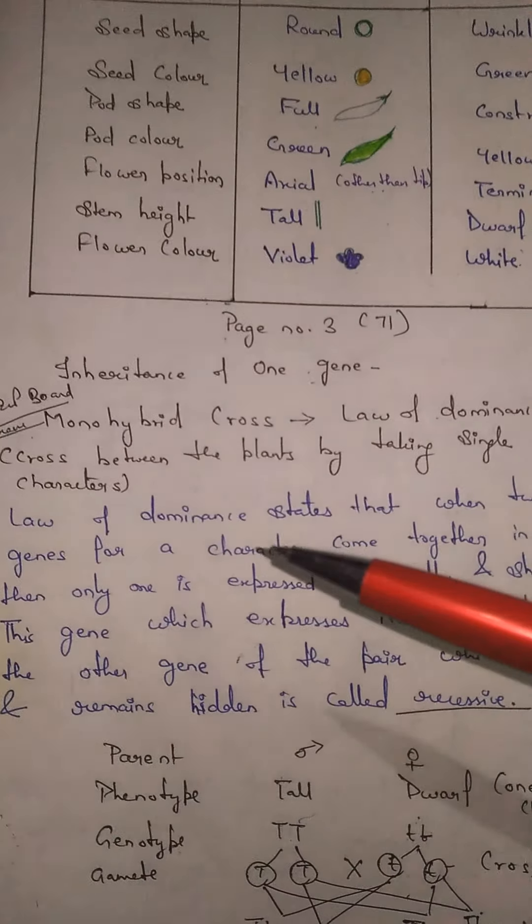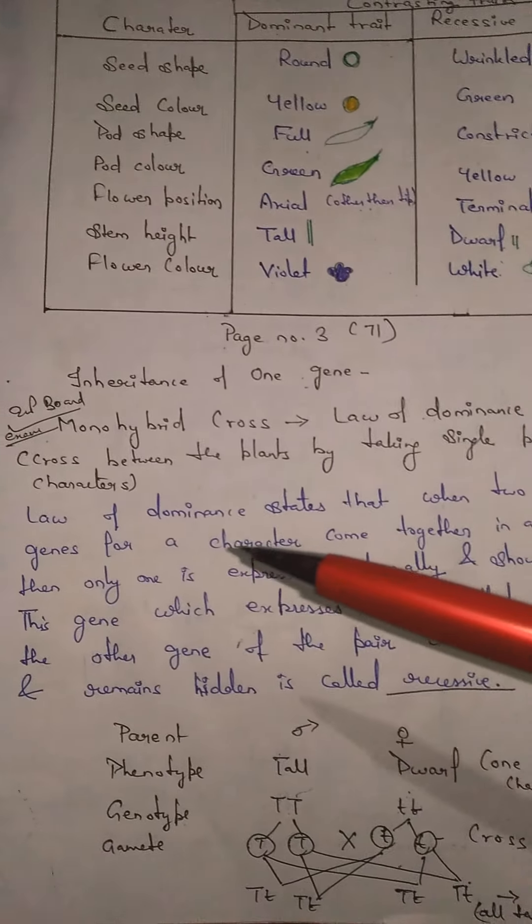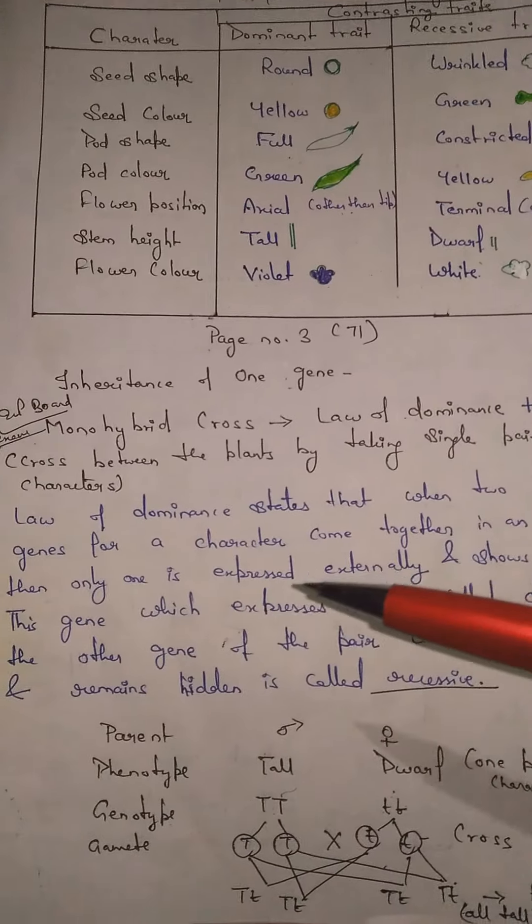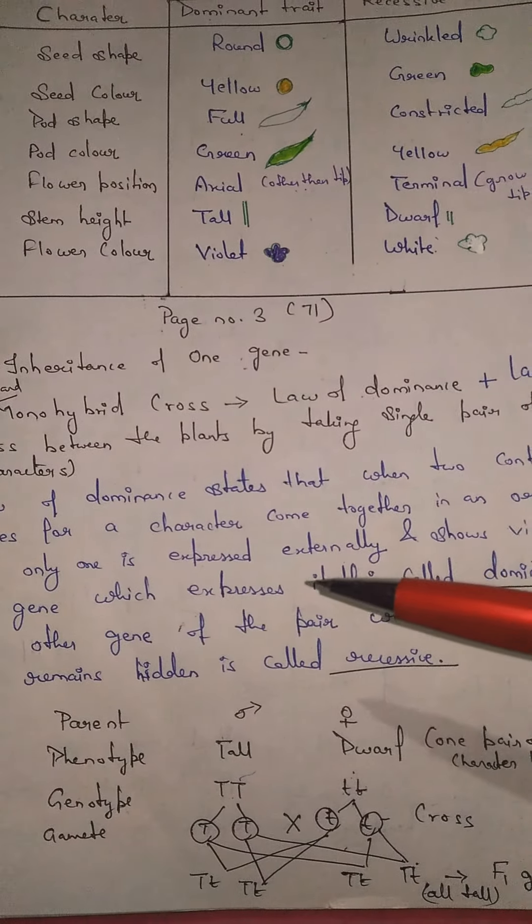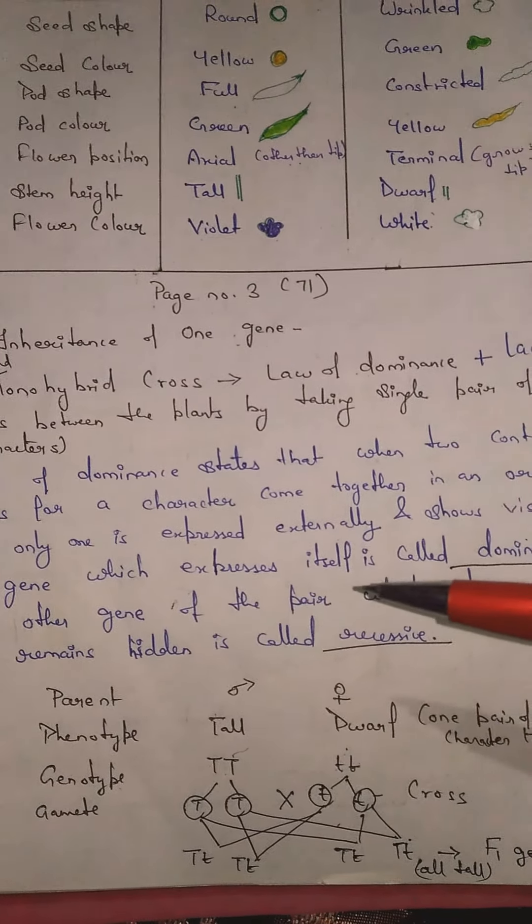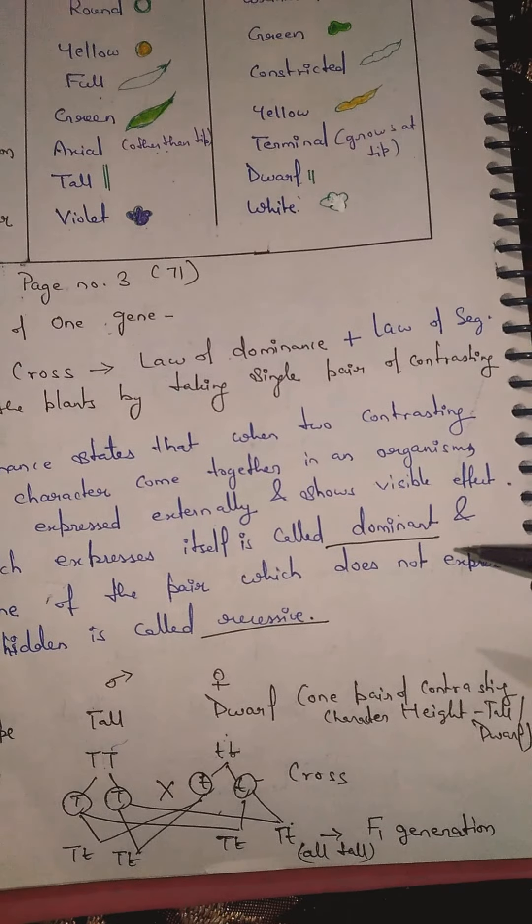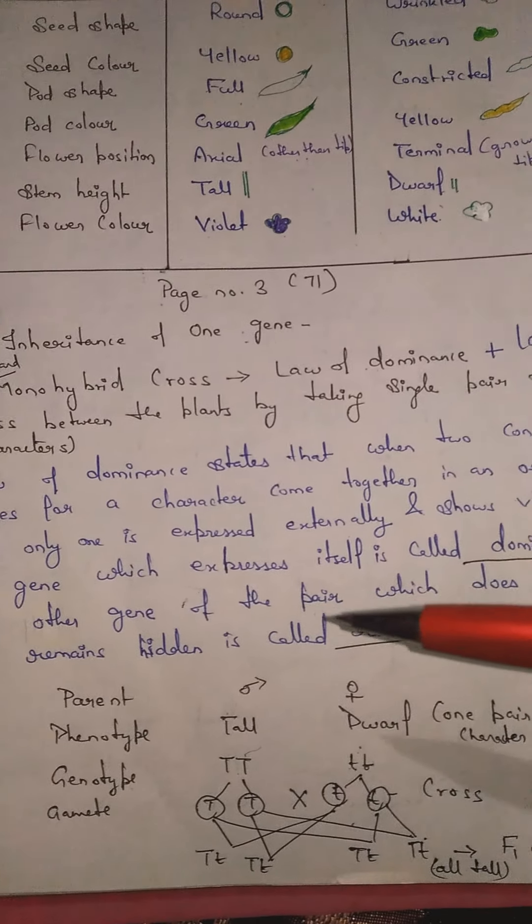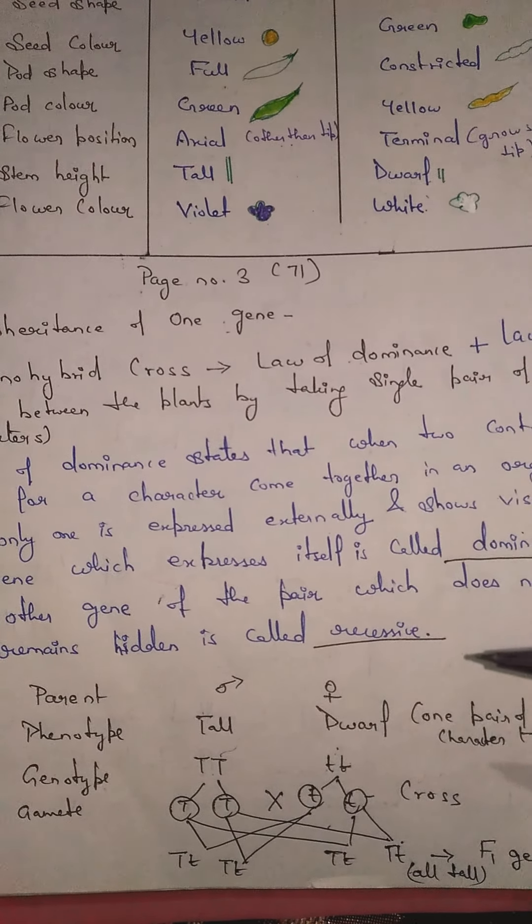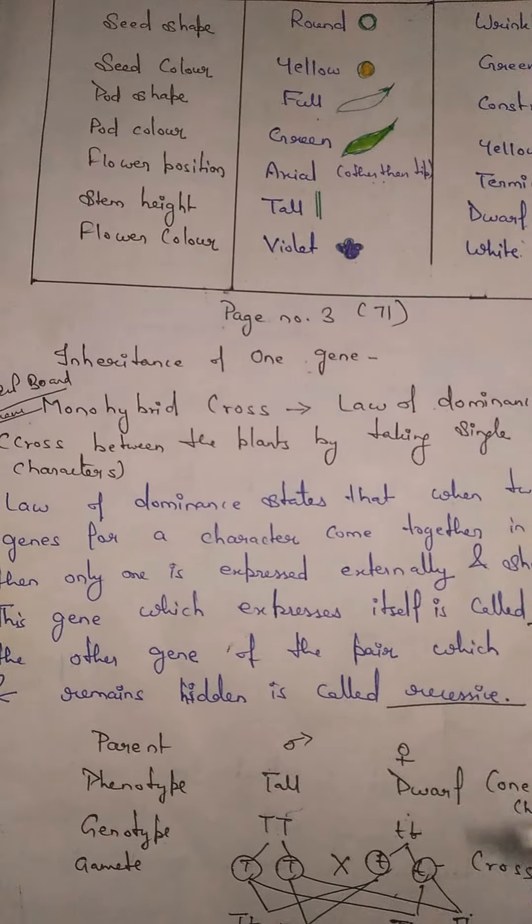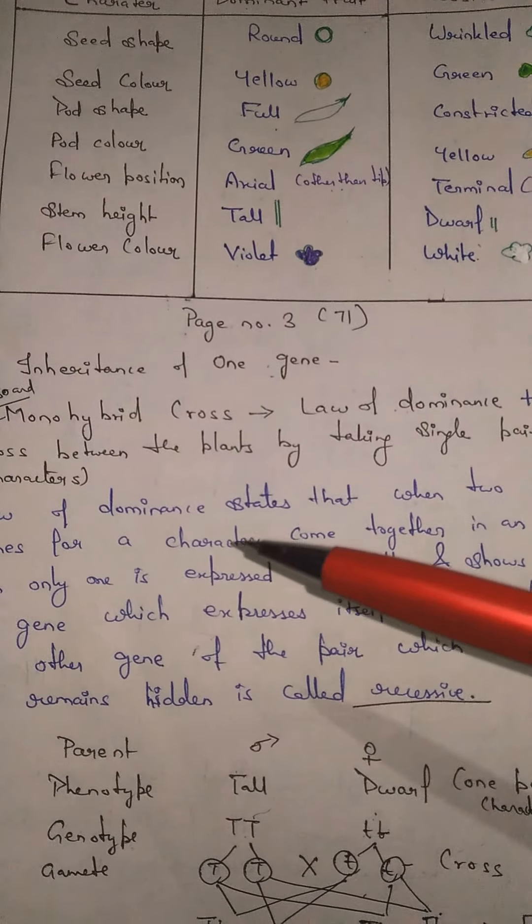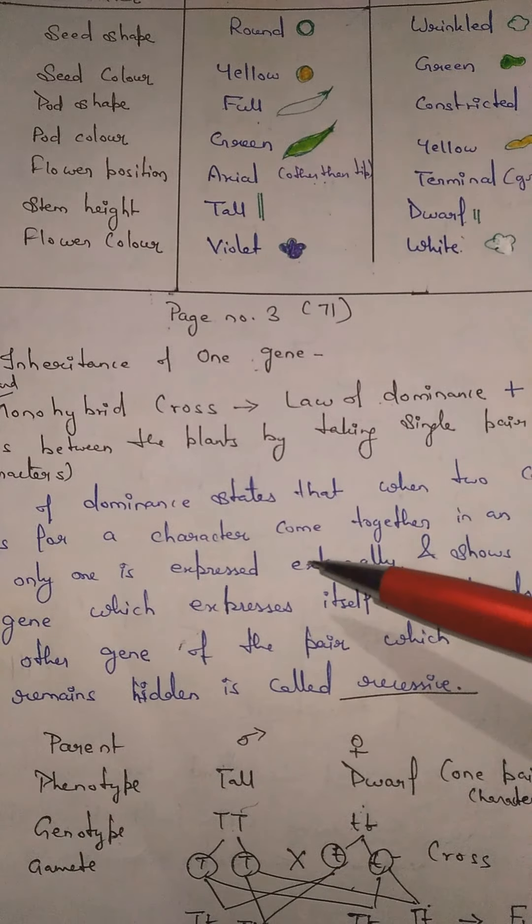Law of dominance states that when two contrasting genes for a character come together in an organism, then only one is expressed externally and shows visible effect. This gene which expresses itself is called dominant, and the other gene of the pair which does not express and remains hidden is called recessive. That means when we are taking two contrasting characters, one will express.